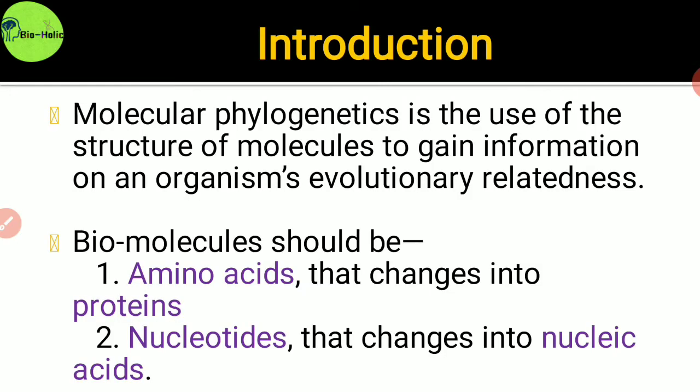What is phylogenetics? Phylogenetics is the science of estimating and simultaneously analyzing the evolutionary relationship among various groups of organisms. And molecular phylogenetics is the use of the structure of molecules to gain information on an organism's evolutionary relatedness.